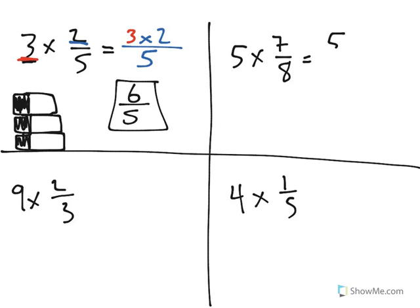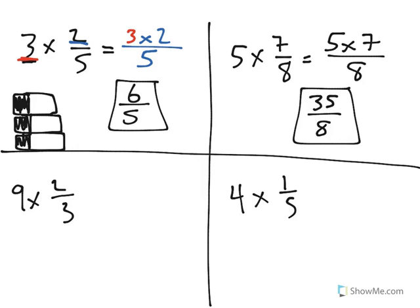Over here we'd have whole number times numerator over the denominator, which remains the same. Five times seven is thirty-five. Eight stays where it is for the correct answer.